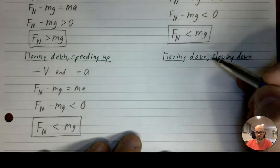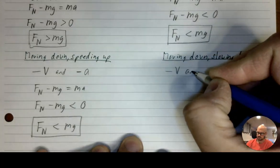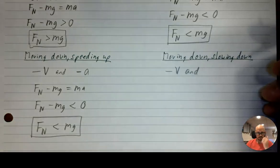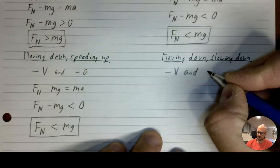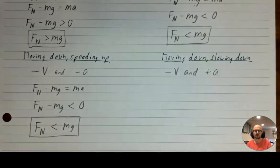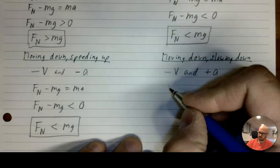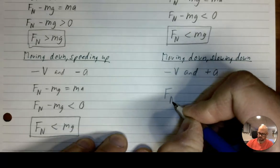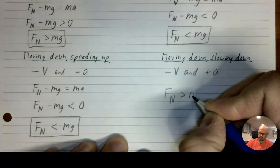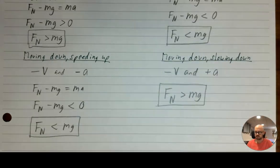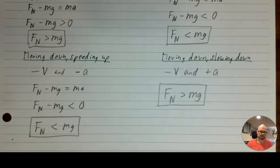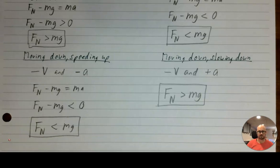Last but not least: moving down and slowing down. Negative velocity, and if you're slowing down your velocity is getting closer to zero, so your velocity has to increase — that's positive acceleration. We've seen positive acceleration before: that's when the normal force is greater than your weight. When you get to the bottom of your ride, the floor of the elevator pushes up on you more aggressively, and that makes you feel like you're getting squished into the floor. We will cover apparent weight again when we study circular motion, but that's the big primer for this concept.